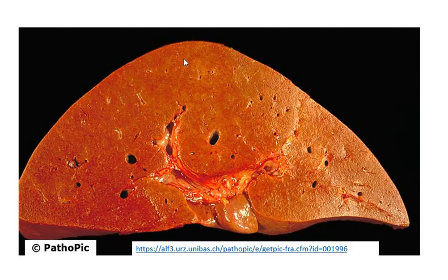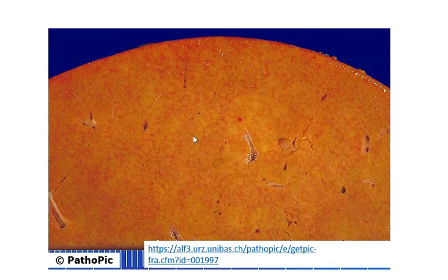Here is another example of amyloidosis, taken from the online pathology resource PathoPic. This liver appears to be a little bit paler than usual, and in fact it has an almost yellowish appearance. And here is a closer-up picture of another case showing you this waxy yellowish appearance. This is different from fatty liver, where usually the liver itself appears to be quite pale.